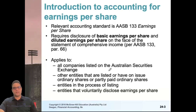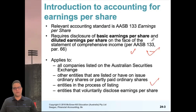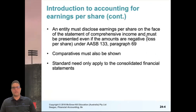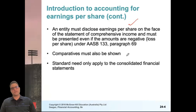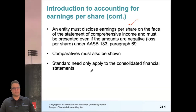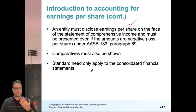The standard applies to listed firms. Under IAS 33, in Australia it becomes AASB 133 — essentially the same standard. Disclosure of EPS is a mandatory requirement. This chapter is mostly focused on the empirical part: how to calculate basic EPS and diluted EPS.